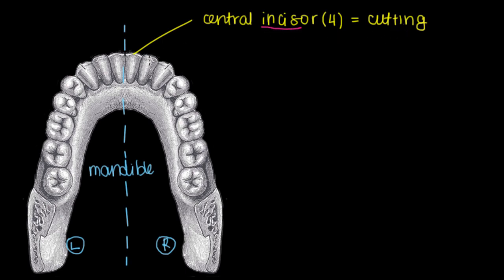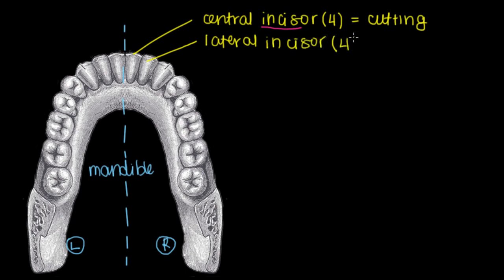The same thing is true when we talk about the lateral incisors. We've got four of them in total, just like the central incisors — one on each side in both jaws. They are also used for cutting our food.